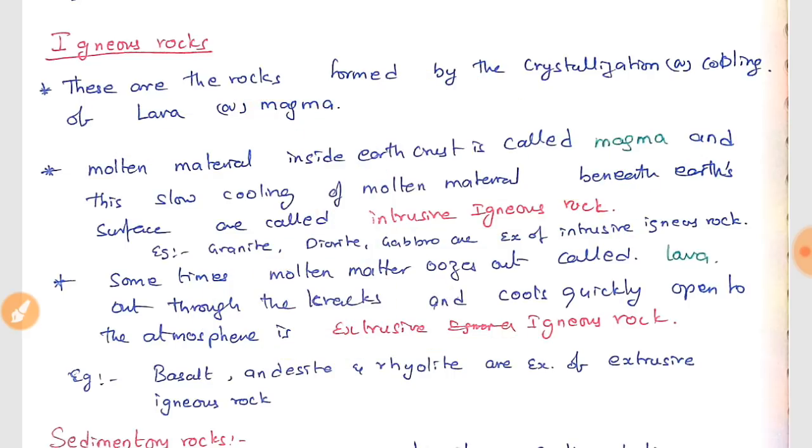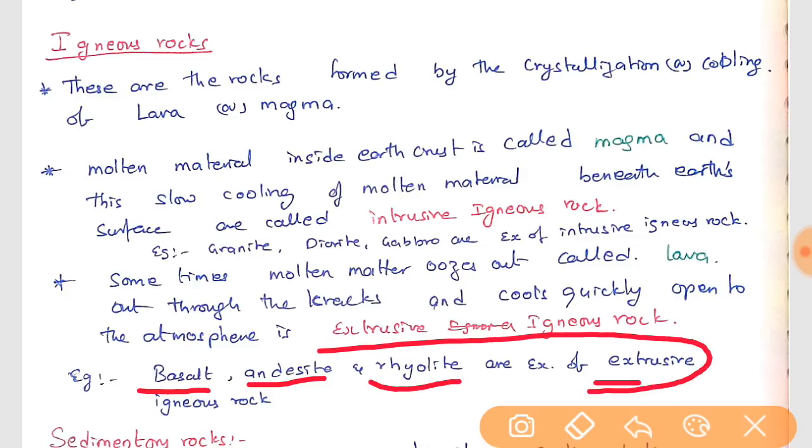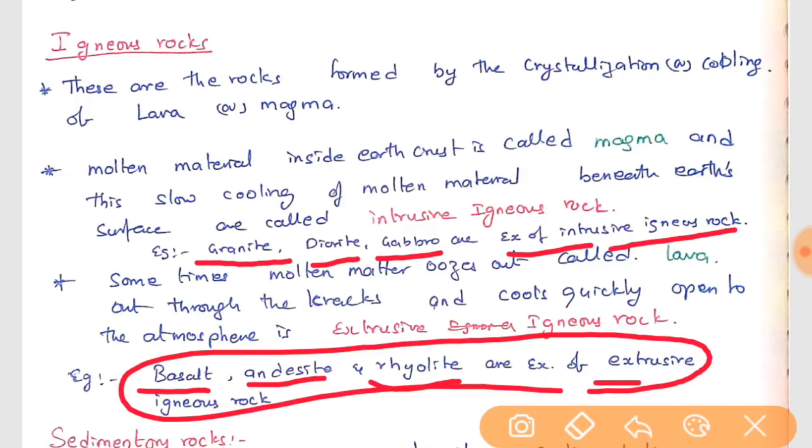The kind of rocks which we found as igneous rocks are basalt, andesite, rhyolite, and are the examples of extrusive igneous rock which came out. For intrusive igneous rock, it is granite. Granite is found inside the hills or mountains. Diorite and gabbro are examples for intrusive igneous rocks. Now you are clear with the igneous rocks.